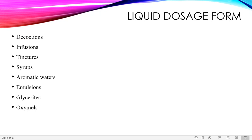Next are tinctures. Up to decoctions and infusions, water was used as the solvent. In tinctures, we move to the next category of solvent — alcohol. Tinctures are alcoholic or hydroalcoholic extracts of herbal material. For preparation, we usually take one part of herbal material and five to ten parts of solvent such as ethanol. Tinctures have greater stability as they are alcoholic preparations and can be stored for up to two years.